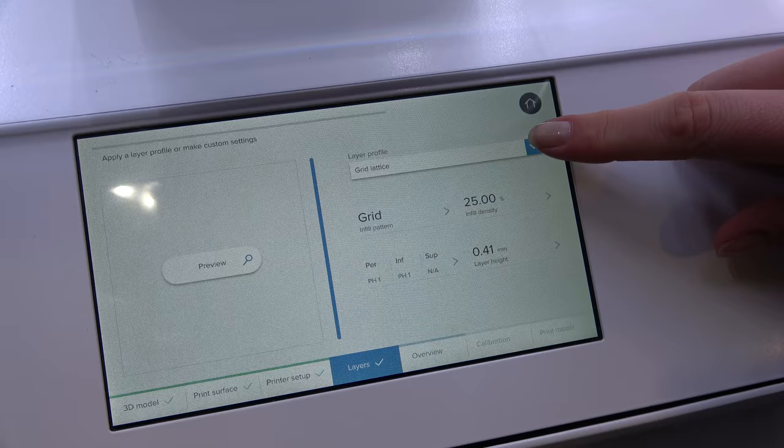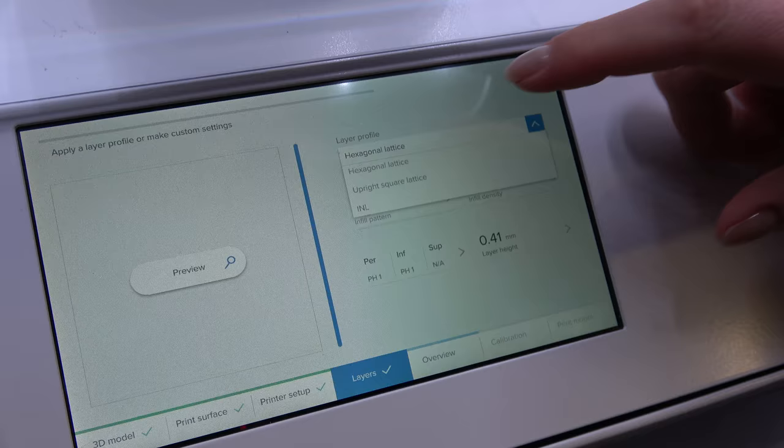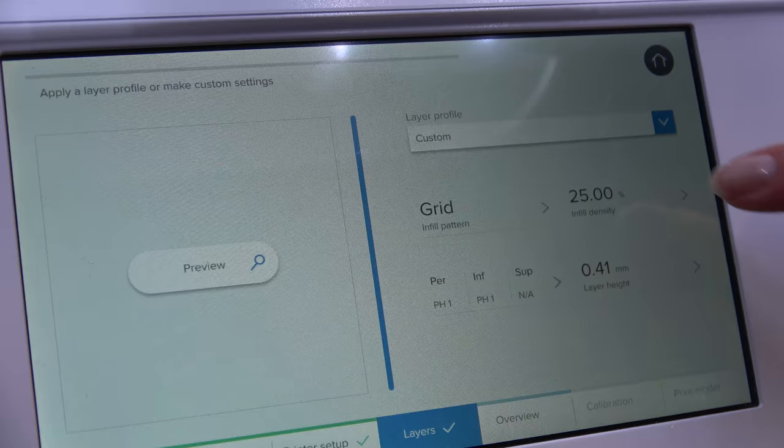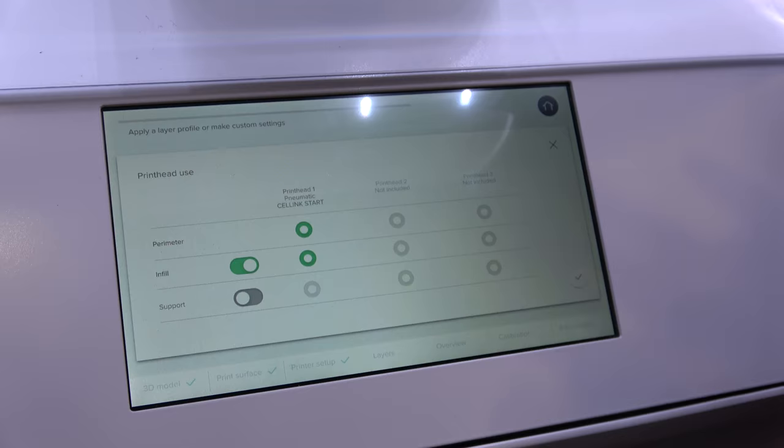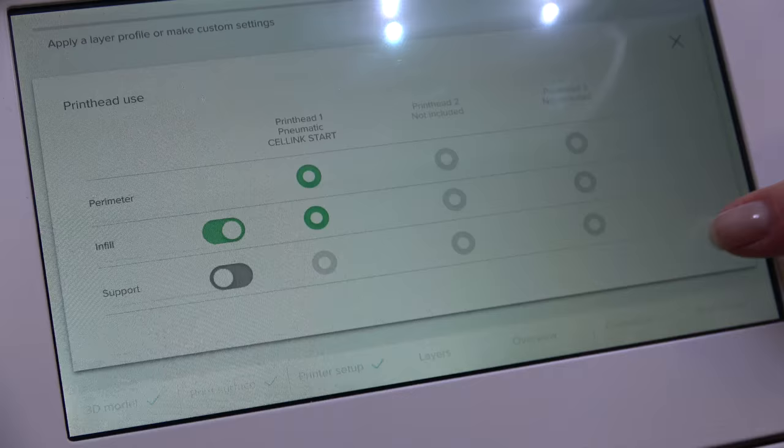We move on to the layers. You can choose to have a hexagonal or a honeycomb structure or, for example, a regular grid structure. And then you can choose which print head you want to print what part of the structure. That is possible to do here as well.